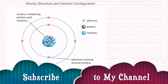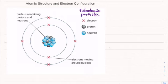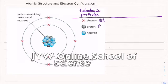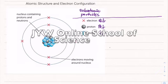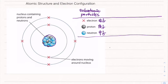In this video we focus on atomic structure and electron configuration. An atom is made up of three subatomic particles: electrons, protons, and neutrons. Protons and neutrons are found inside the nucleus.